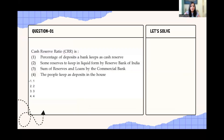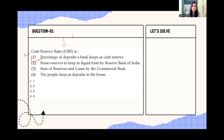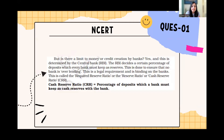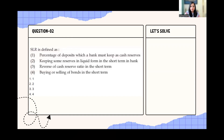Let's begin with the first question: What is CRR? Cash Reserve Ratio — the percentage of deposits a bank keeps as cash reserve. Looking at the other options: some reserves kept in liquid form by RBI — no. Some reserves and loans — no. People keep deposits in the house — no. So CRR is the percentage of deposits a bank keeps as cash reserve, as stated in the NCERT.